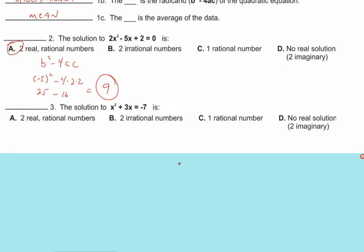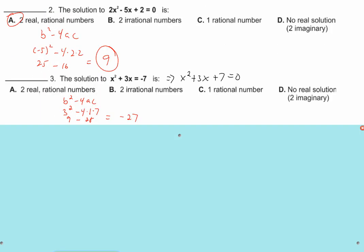Go ahead and do problem 3 — same concept. Did you get negative 27 for the discriminant? Negative 19 — right, all those numbers are correct. Positive 9, negative 28, negative 19. Once you got negative 19, then what did you determine? It is D: no real number solution — they are two imaginary or complex number solutions.